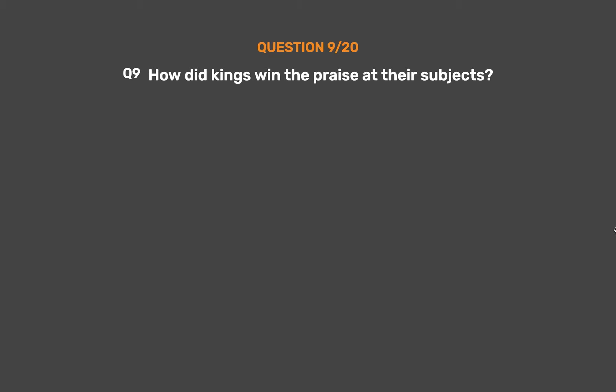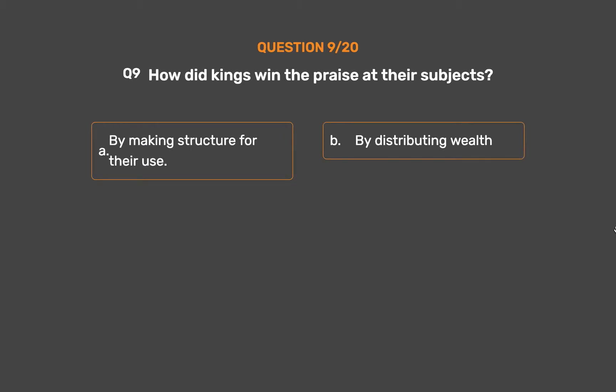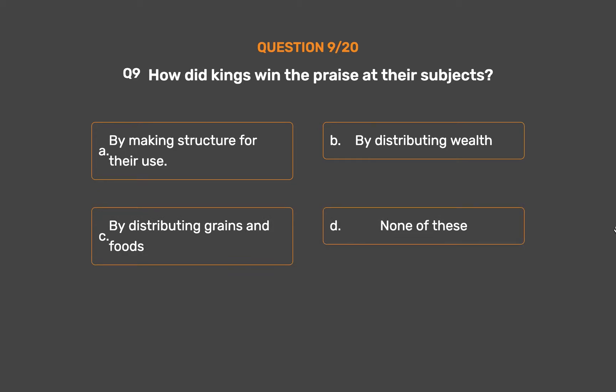Question No. 9: How did kings win the praise of their subjects? Option A: By making structures for their use. Option B: By distributing wealth. Option C: By distributing grains and food. Option D: None of these.